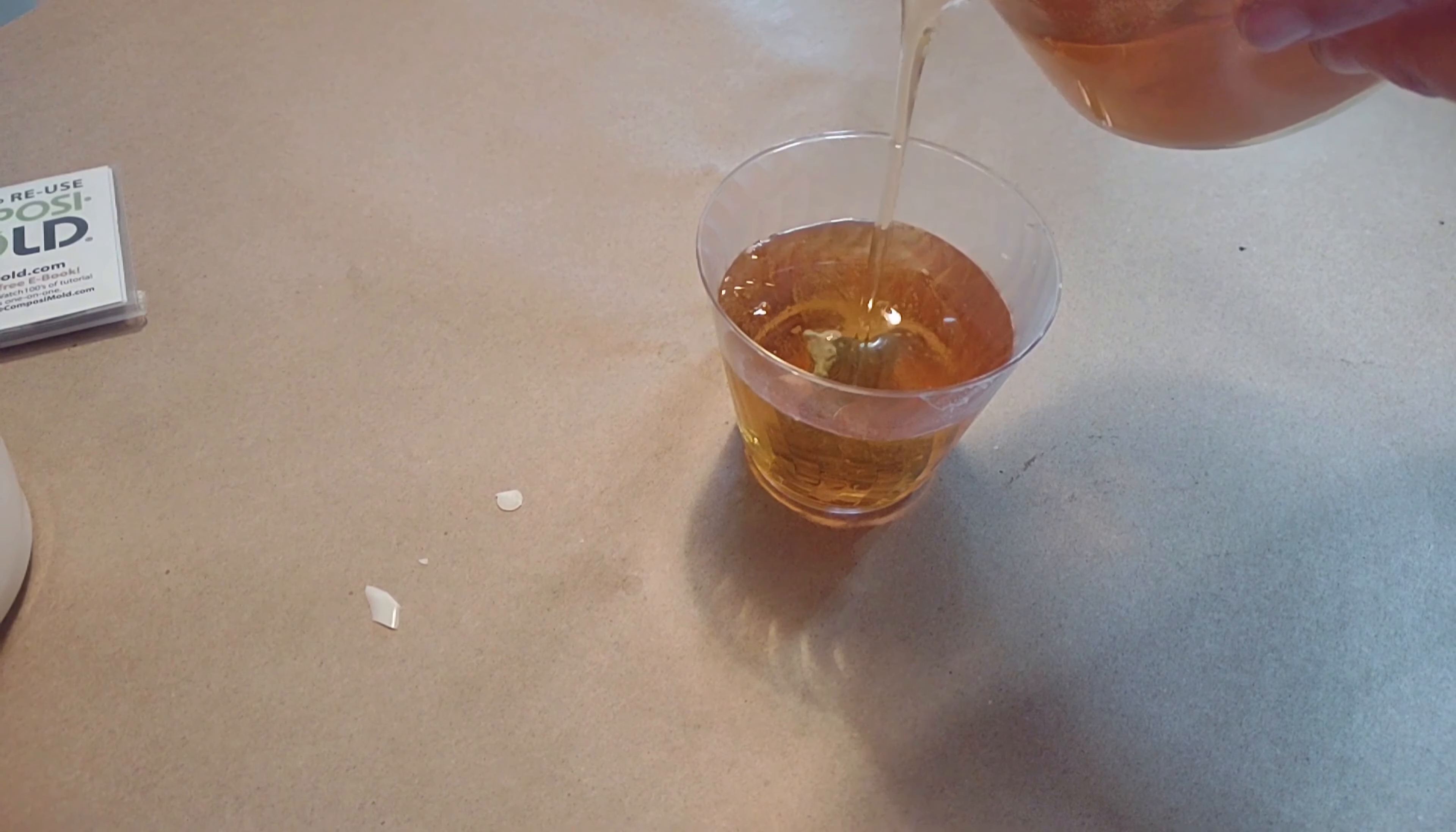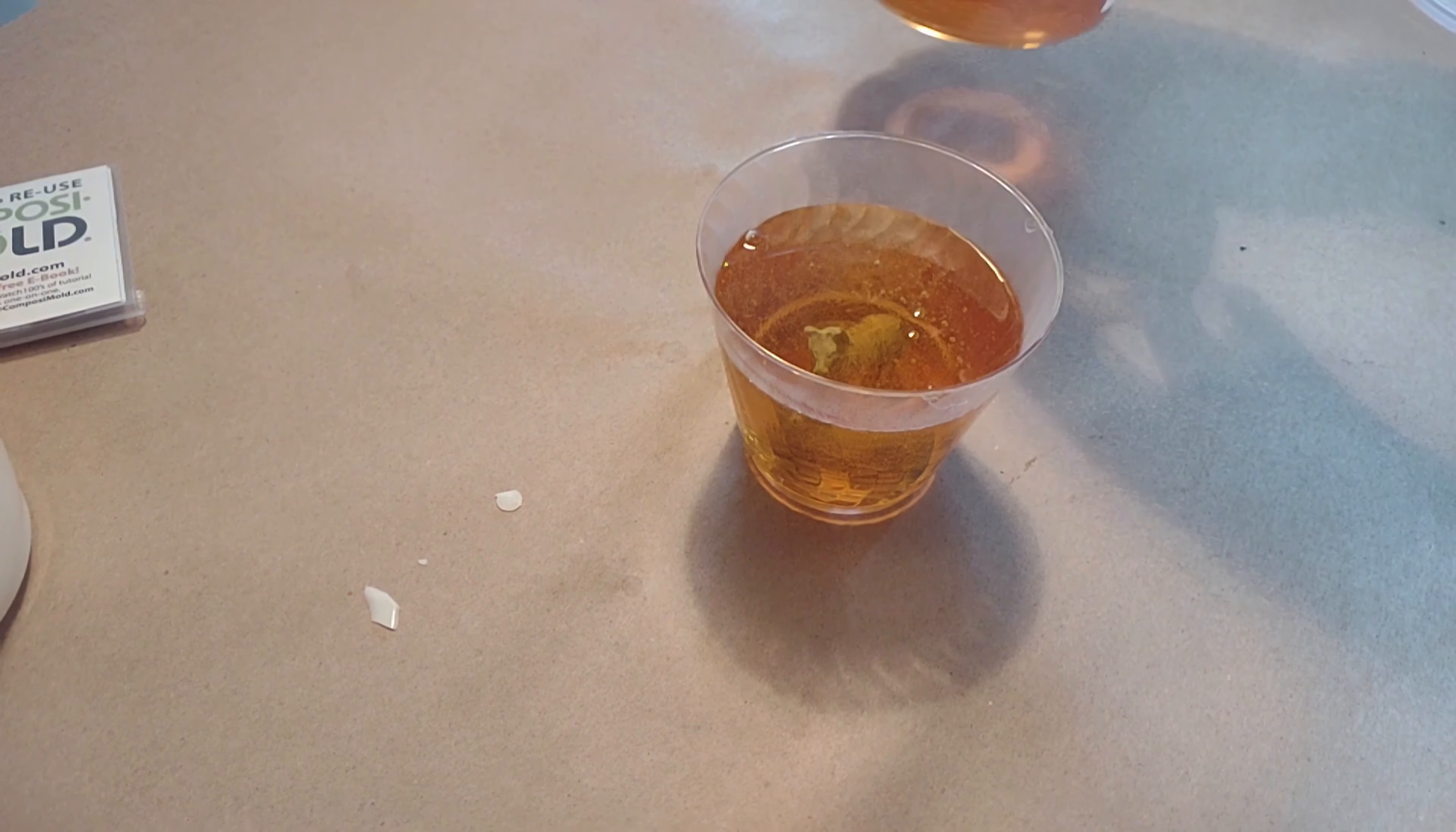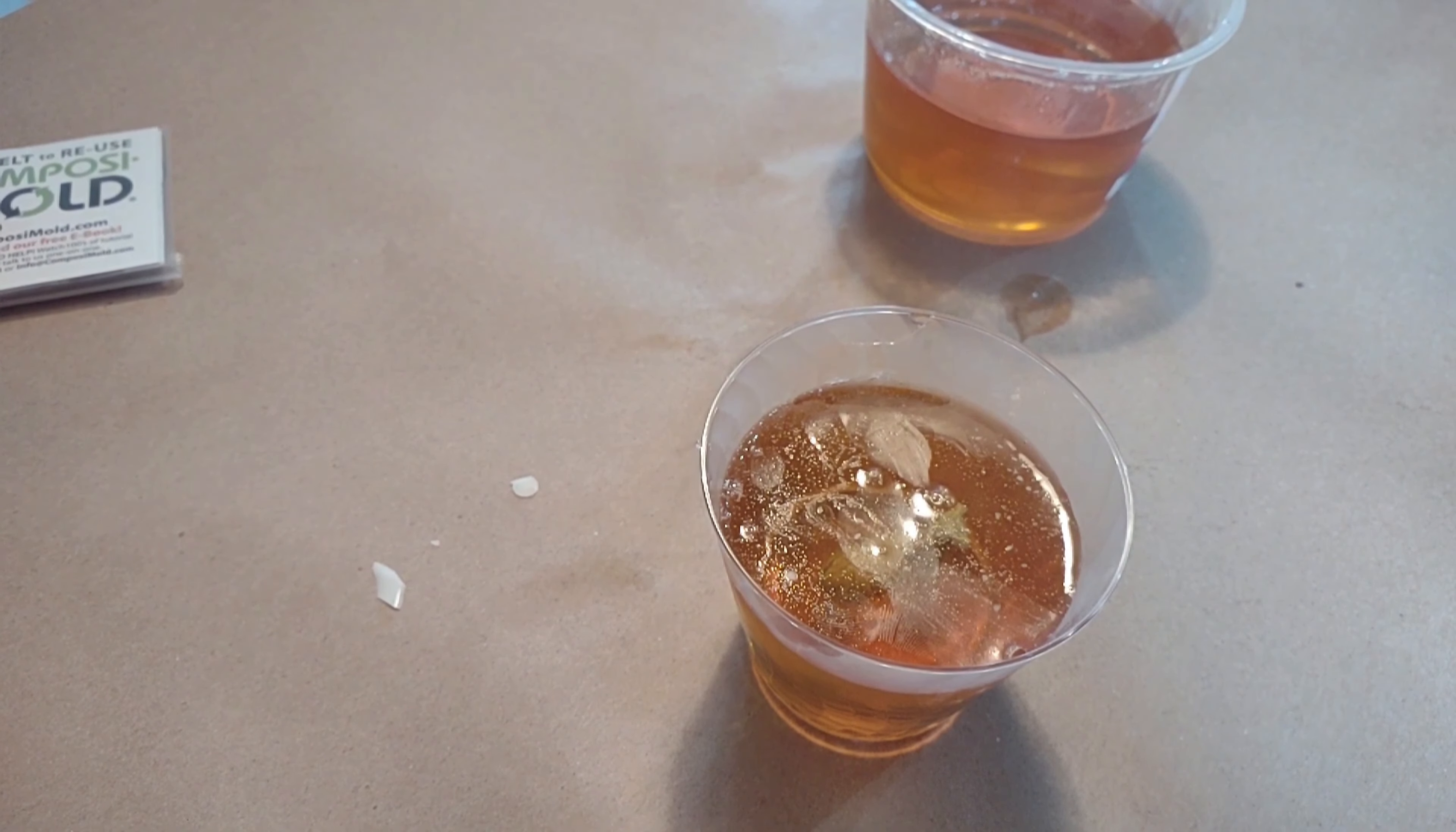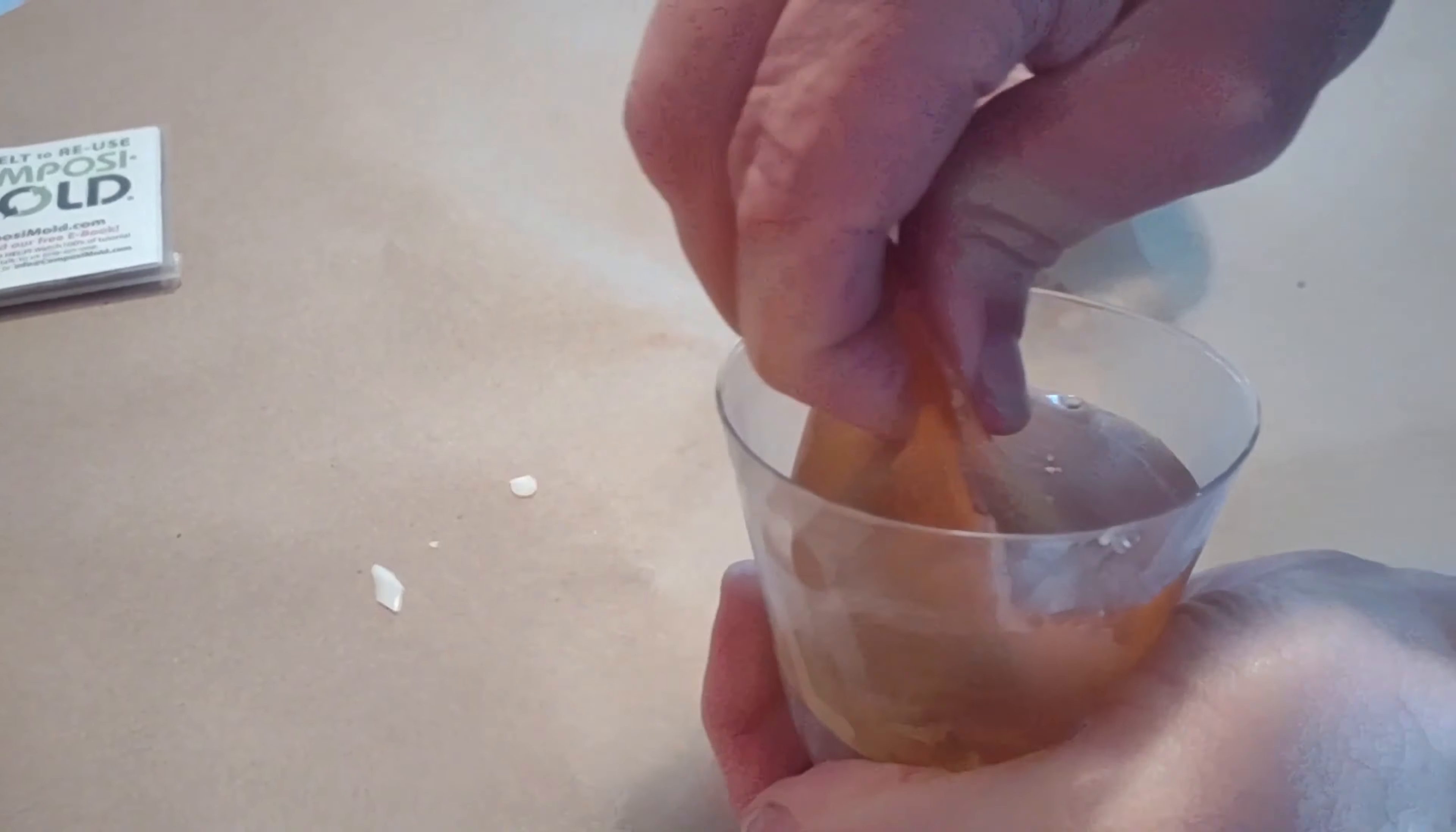To clarify I use ComposiMold Flex for the making of this mold but you can use whatever you use. ComposiMold Flex is a little bit more flexible so that pulling out the wax should be a little bit easier than using the ComposiMold original. Let the ComposiMold cool to solidify or put it in the refrigerator or freezer to cool it even faster and then you just have to remove it from the mold box and remove the original object from the ComposiMold.